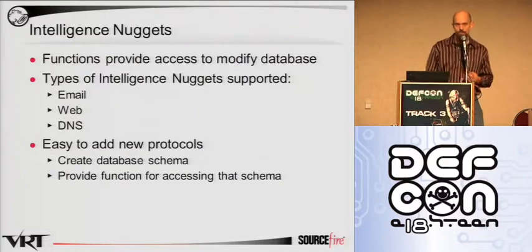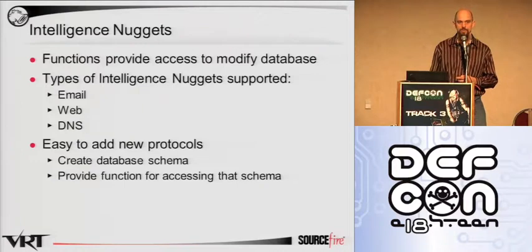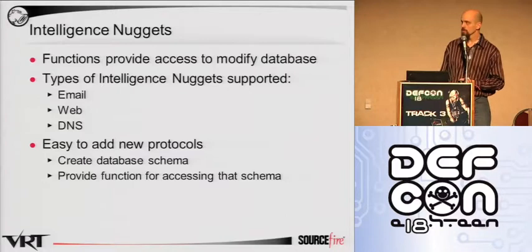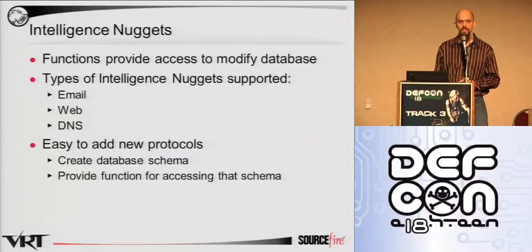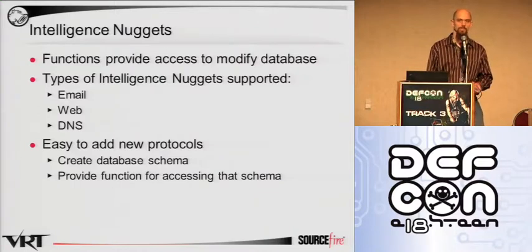Intelligence nuggets are more about data that we want to keep track of, rather than event or alert data — tracking something more in depth. As such, they are really interfaces for adding information to the database. The types of protocols we have right now are email, web, and DNS. More protocols are on the way, and if you have other types of data you want to put in, it's as simple as creating the schema for storing that data and creating a function for populating the schema.